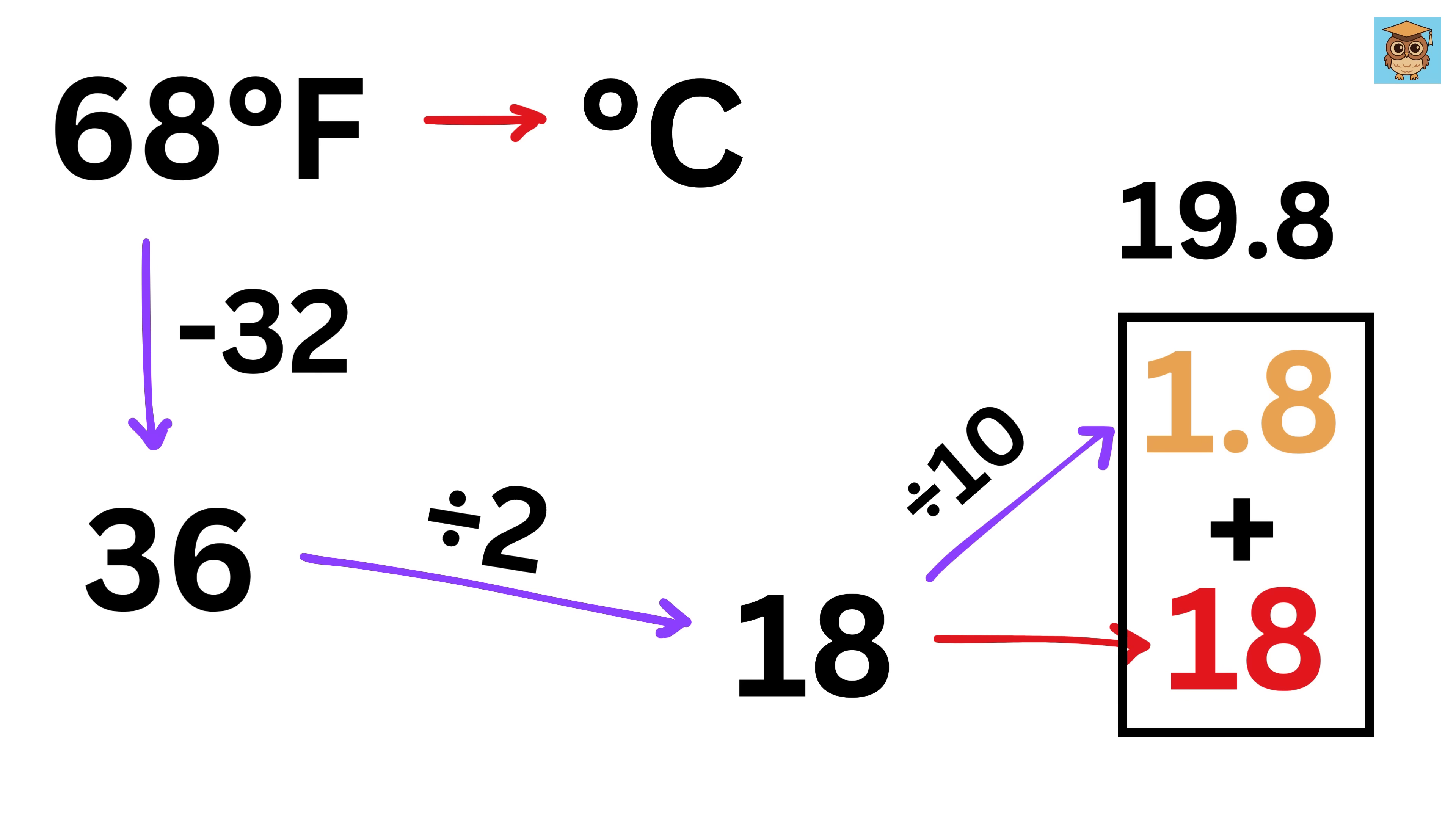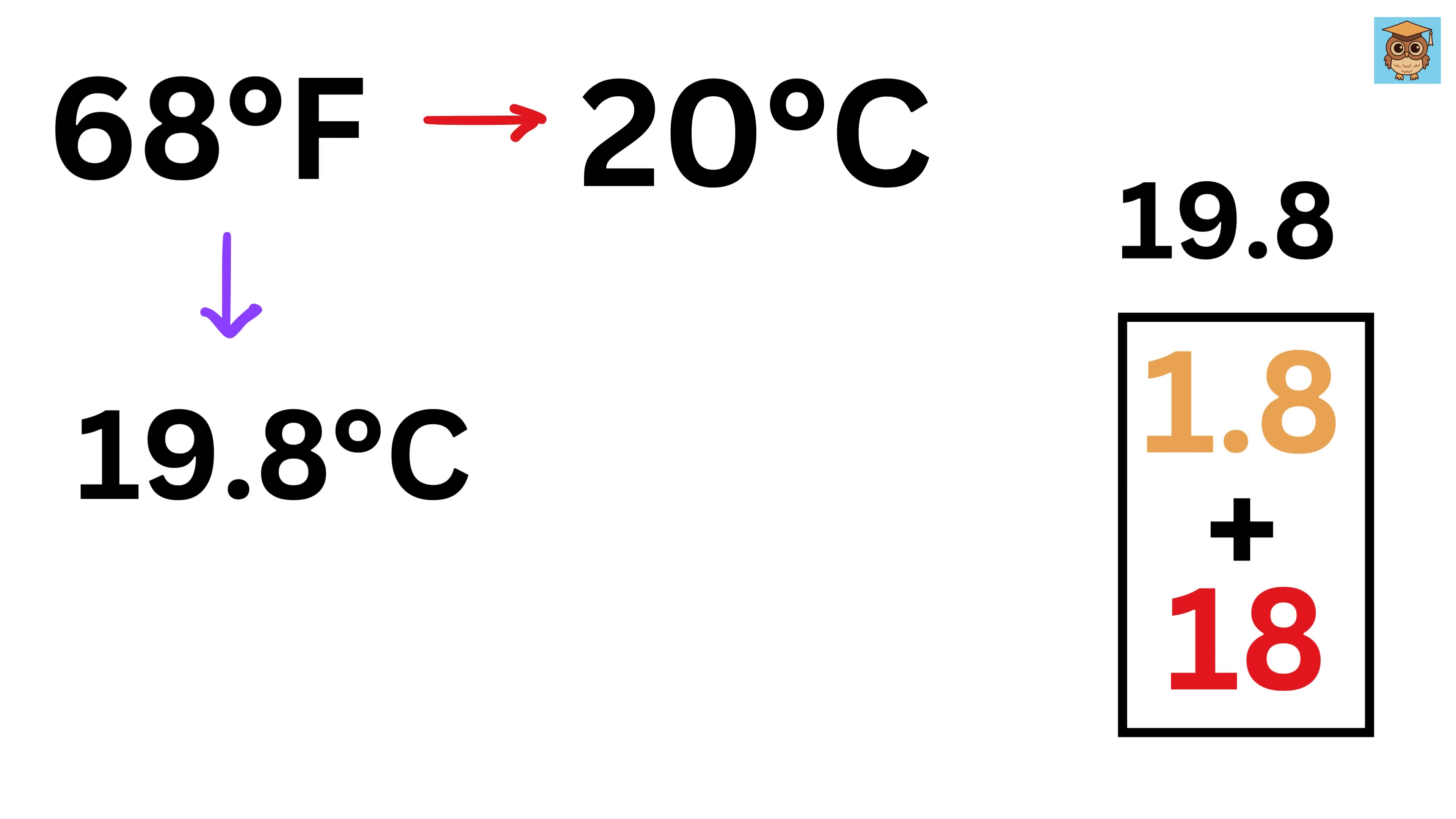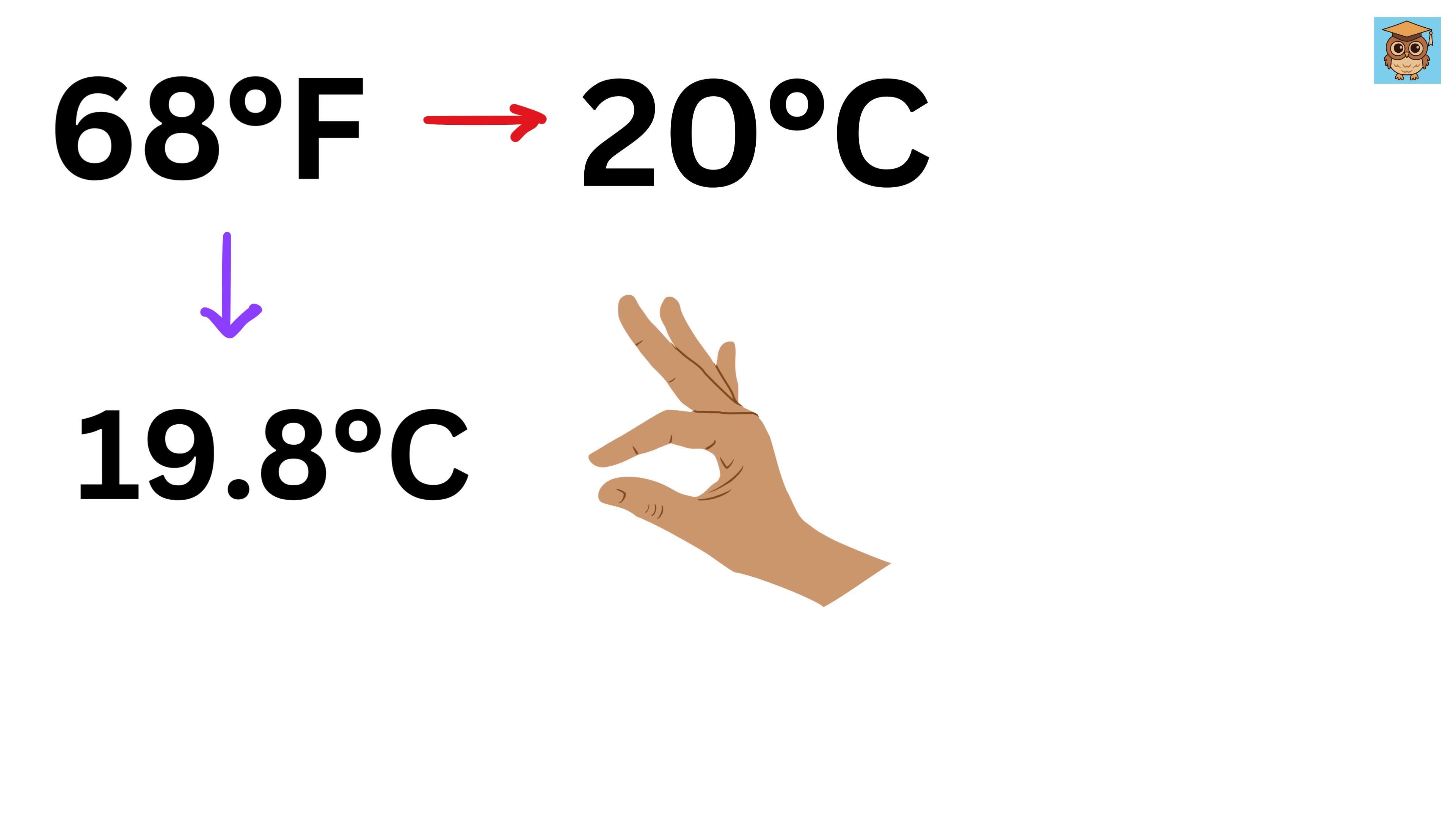Finally add both of them to get 19.8 as our final answer. So 68 degree Fahrenheit is approximately 19.8 degrees Celsius. Actual value is 20 degrees Celsius, which is very close to our answer. That was super amazing.